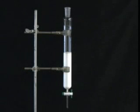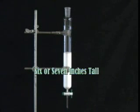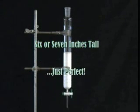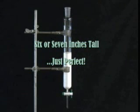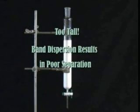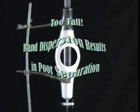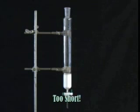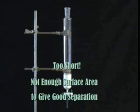The last major decision to make is what diameter of column to use. Different people have very different opinions about this, but in general, it is a good idea to choose a column that will fill 6 to 7 inches with the chosen amount of silica. In a taller column, the different bands of compounds will disperse and overlap. But a shorter column will not have enough surface area to give good separation.